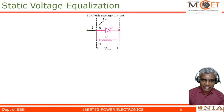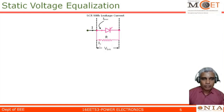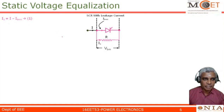Applying Kirchhoff's current law at this node, I can write: I equals IBMN plus I1, because I is the entering current and these two currents are leaving currents. So I equals IBMN plus I1, or I1 equals I minus IBMN. Let me keep this as equation 1.